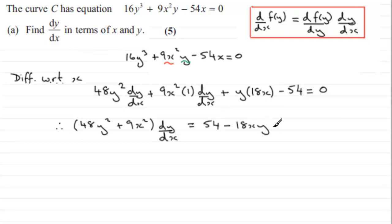And then equals, and as I said earlier, we'll add 54 and subtract the 18xy. Okay, so we're nearly there. To get dy/dx, all I need to do is just divide by 48y² + 9x².